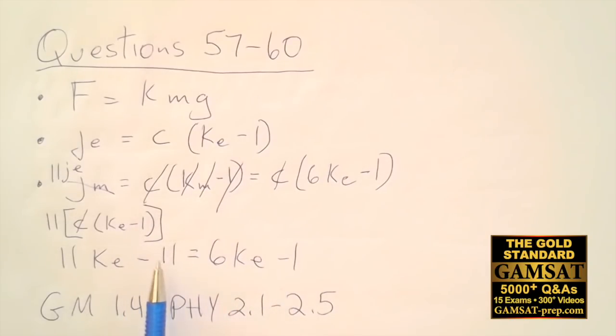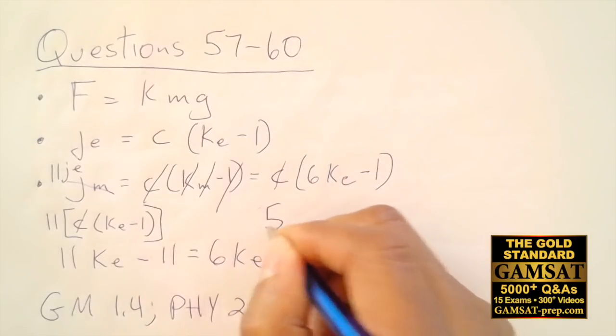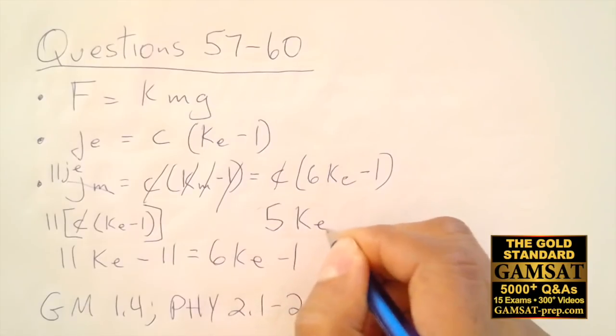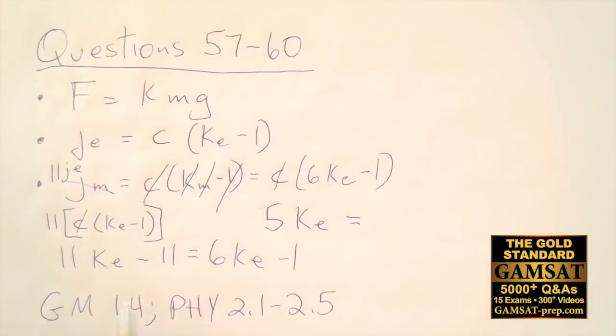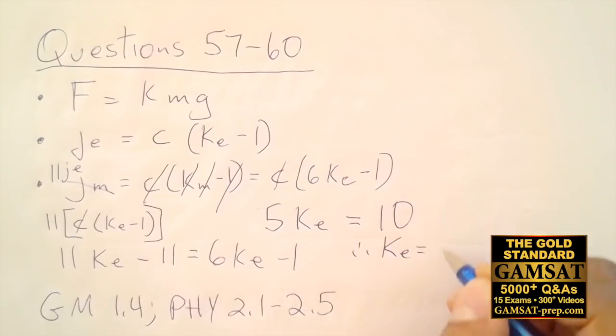I'll add 11 to both sides, and then I'll end up with 10 here. I'll subtract 6 KE from both sides, and then I'll end up with 5 KE there. I'll have 5 KE is equal to 10. Therefore, KE is equal to 2.